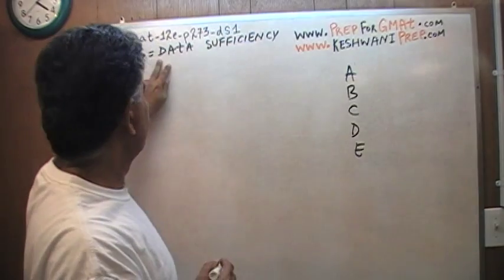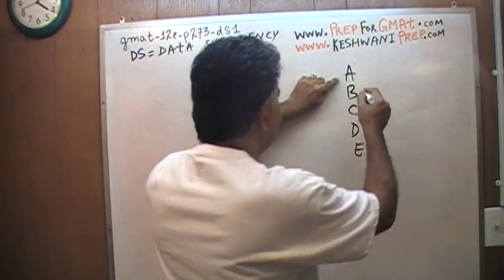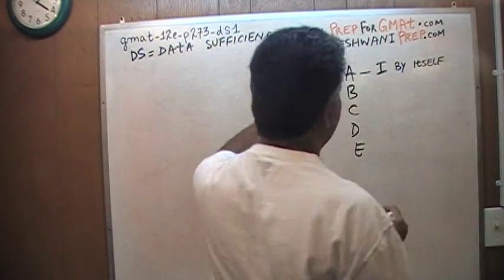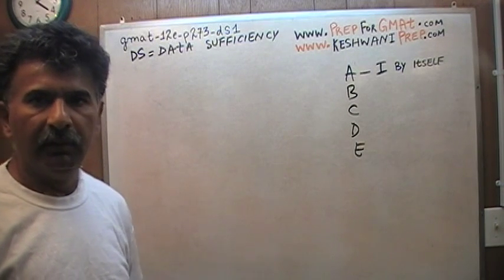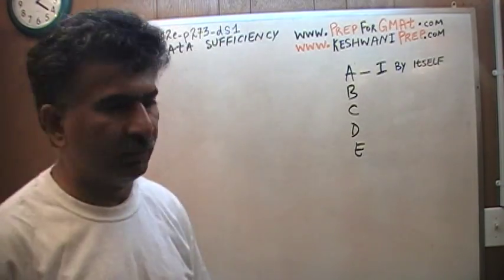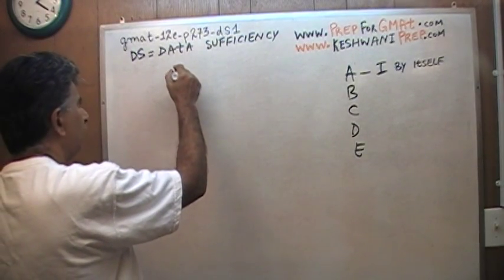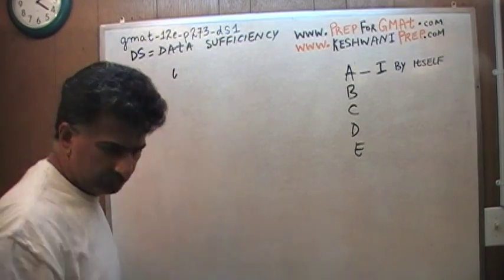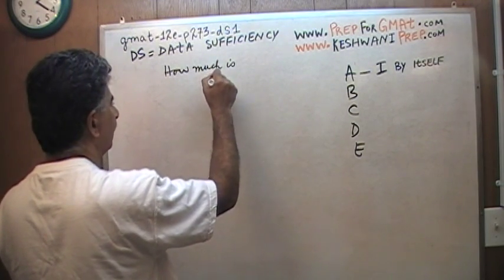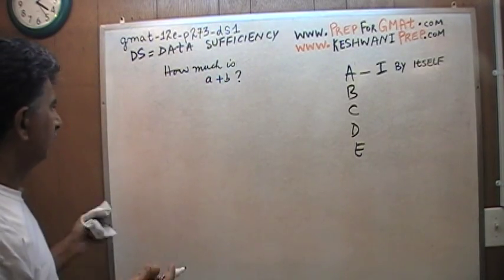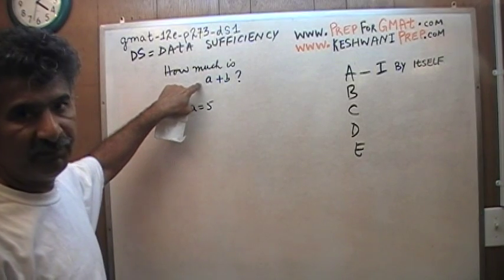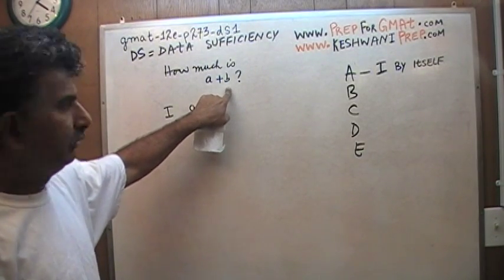You are to pick answer choice A if the first statement by itself is sufficient. Let me give you an example — so simple it will not appear in the exam, just to make you understand the meaning of the answer choices. Say for example, I ask you: what is A plus B? That's the question. In the first statement, I tell you that A equals 5. Is the first statement by itself enough to answer this question? Obviously not, because we do not know what B is.